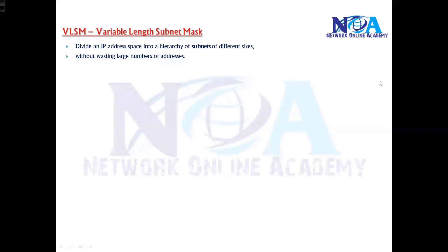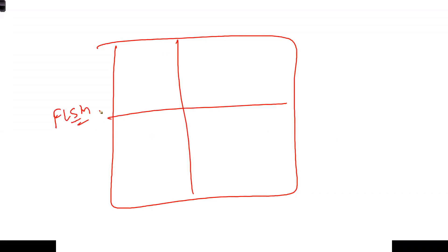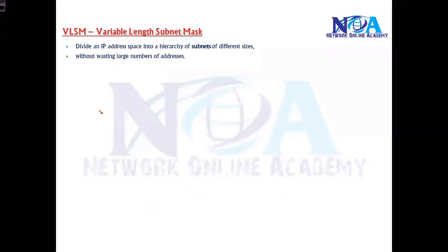The next thing is VLSM - Variable Length Subnet Mask. In all the previous sessions, we've seen FLSM where we divided all networks equally. Most of the time, the requirement may not be the same in all departments.